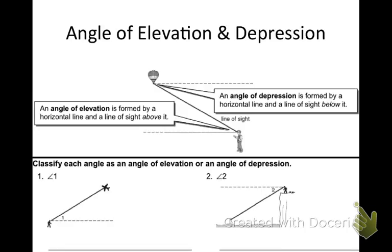Angle of Elevation: an angle of elevation is formed by a horizontal line and a line of sight above it. Think about the word elevation — when you think of elevation, what do you think of? High, going up, right? So the angle of elevation is the angle that is made when you kind of look up. If you were to look at something above you, that is an angle of elevation.